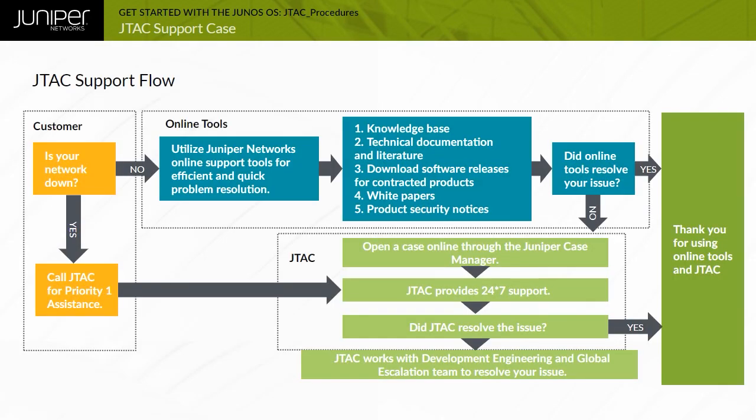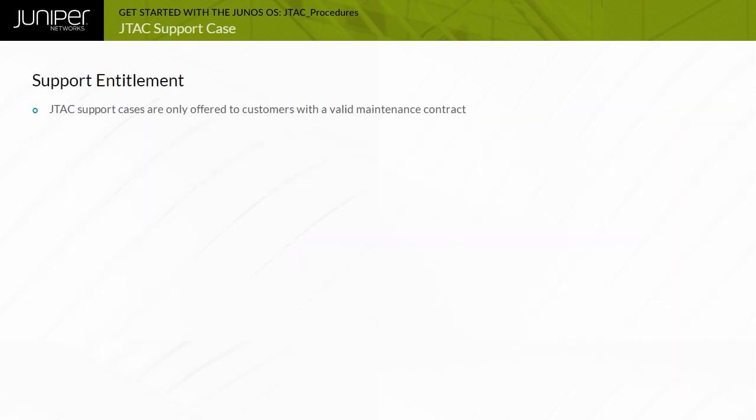The Juniper Networks Technical Assistance Center, or JTAC Support Flow, is illustrated. You will learn the JTAC recommended procedures and the available Juniper online tools later. Juniper Networks offers support only to customers with valid maintenance contracts, and customers must provide a chassis serial number when opening a support case, so that their support status can be verified.